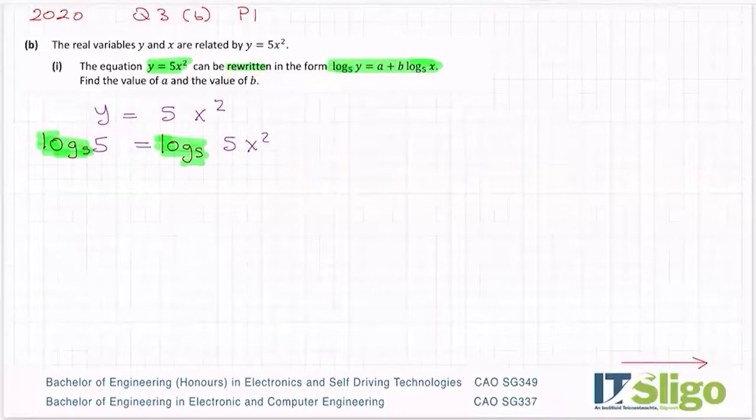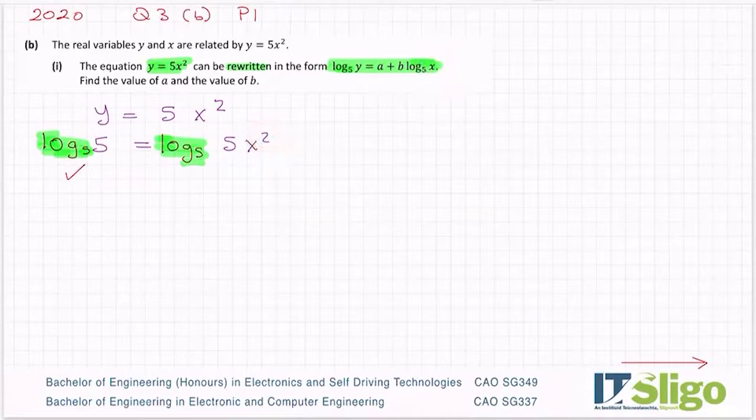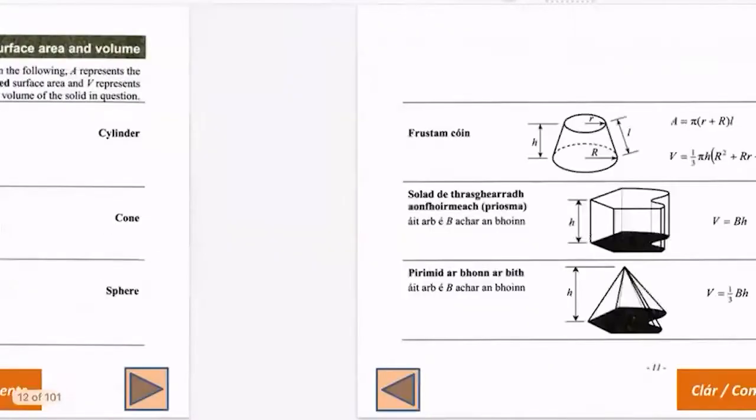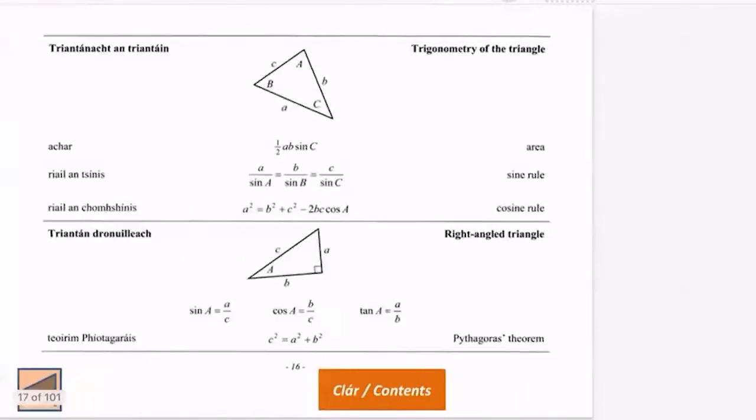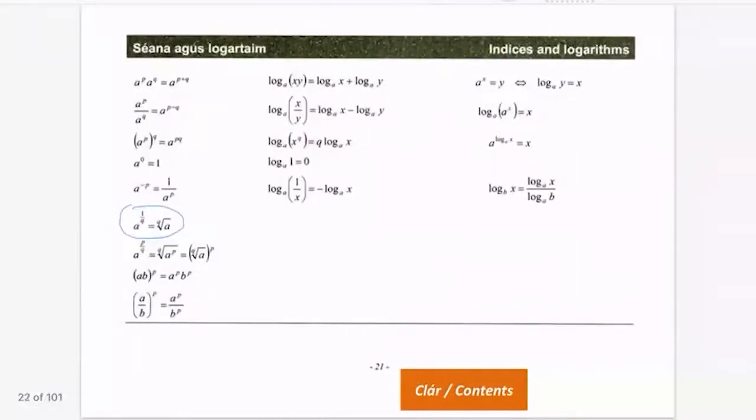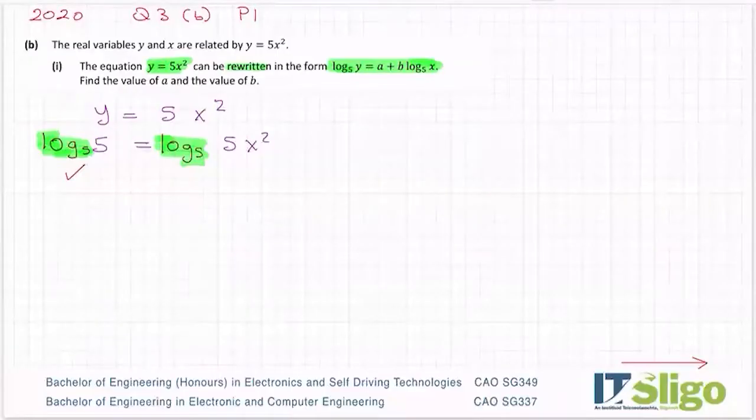I'm happy now with the left hand side, that does look like this, but the right hand side needs some work. So how do I go from log to the base 5 of 5X squared into a form A plus B log to the base 5 of X? Well, one thing I notice here is X and this is X squared. So I think at some stage I'm going to end up bringing down that X using the Q rule. This one here, where if something is in a power you can bring it down in front.